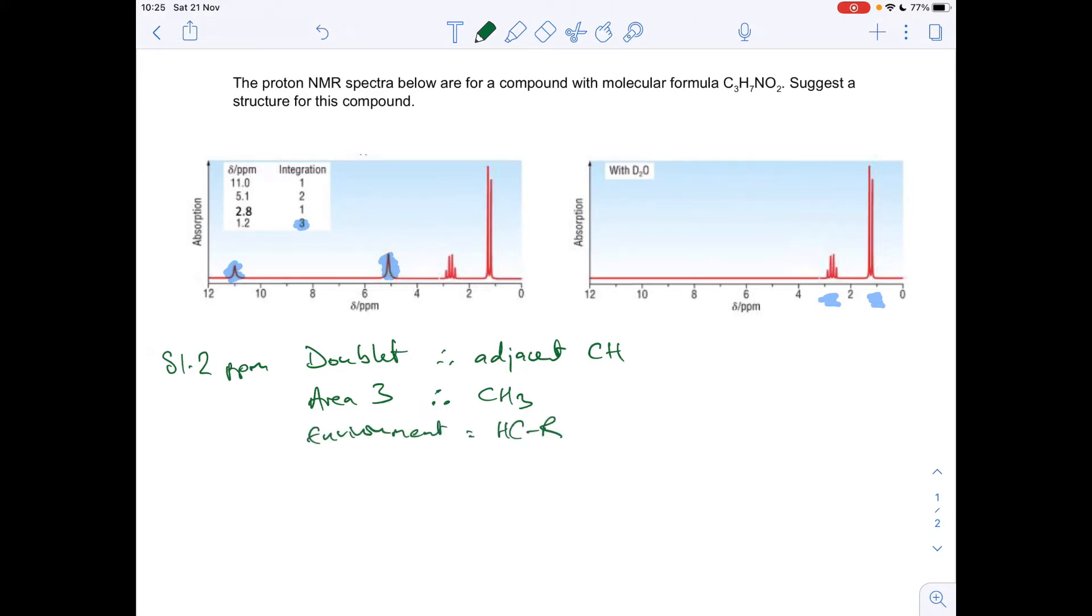So what that means, we can build a picture now of this little bit of the molecule. So what's causing that signal, that doublet, is a CH3 from the area of 3. And next to it, adjacent to it, is a single hydrogen on a carbon. So there's that little piece of the molecule there.